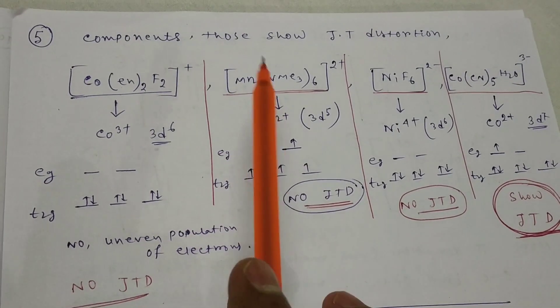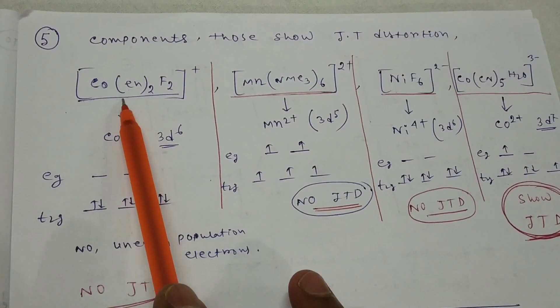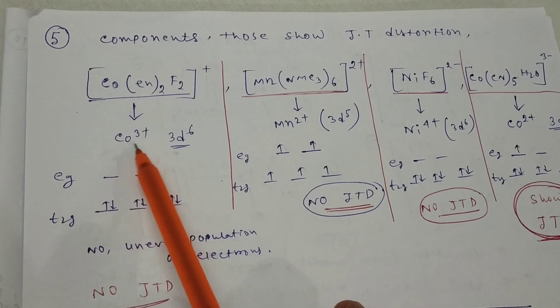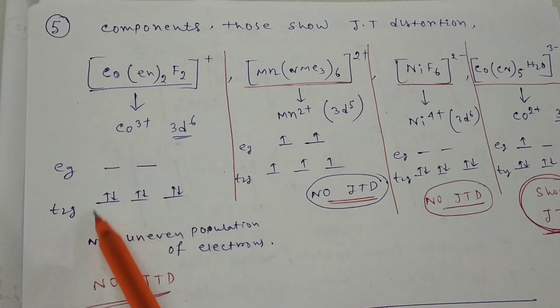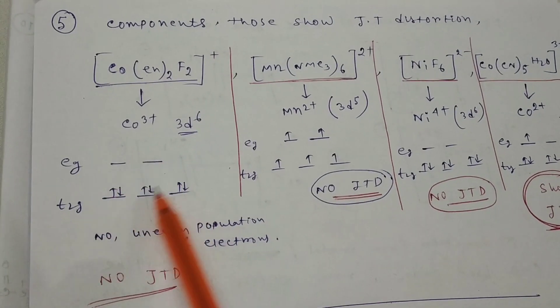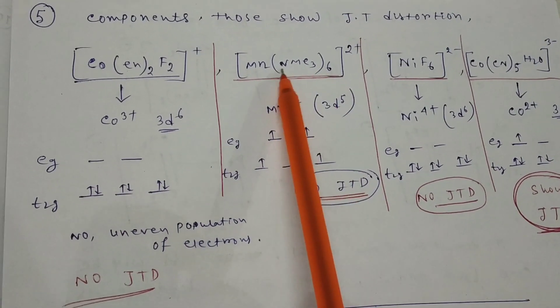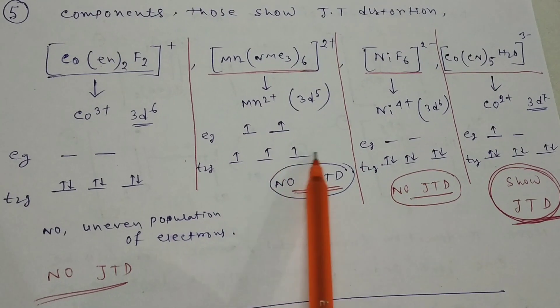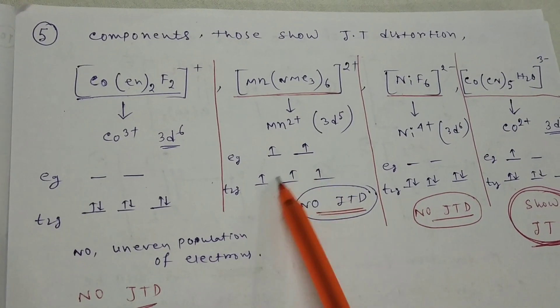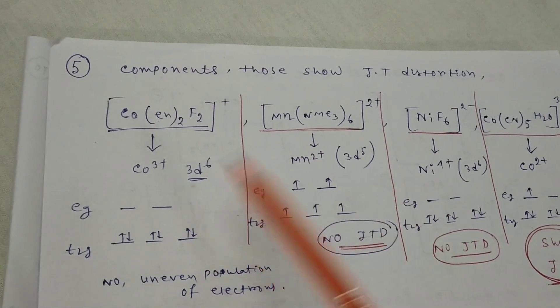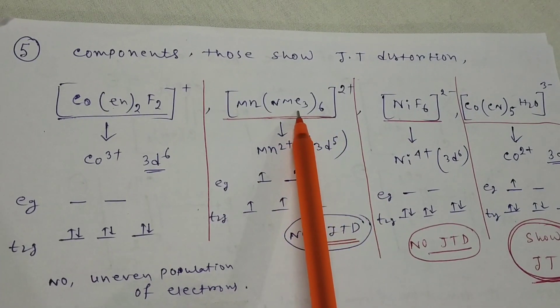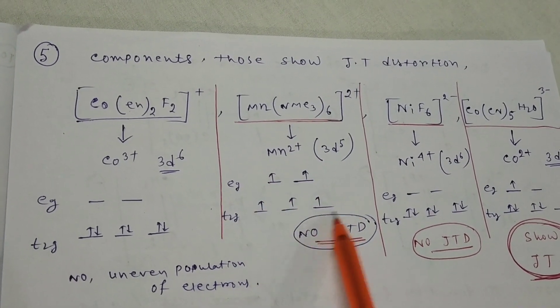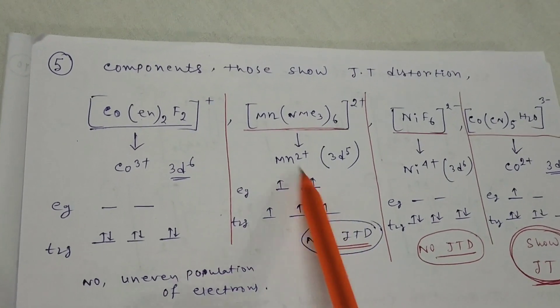The fifth question: components that show Jahn-Teller distortion. For Co(en)2F2^+, cobalt is 3+ which is d6 system. Since 3+ means CFSE is higher, it will be in paired state. No Jahn-Teller distortion because there's no uneven population of electrons in eg or t2g. For Mn(NMe3)6^2+, Mn2+ is d5 system. These are memory based questions, so ligands might be different - after getting original questions I will make another solution. Here also no uneven population in eg and t2g, so no Jahn-Teller distortion. For NiF6^2-, Ni4+ is d6 system, all paired because of higher CFSE. Also no JTD.